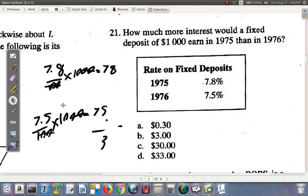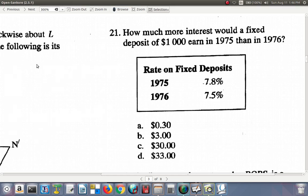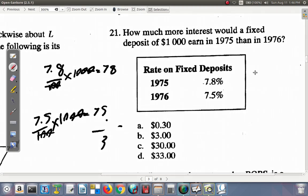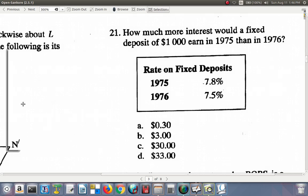You could consider also that when you have 7.8 minus 7.5, you get 0.3. And when you multiply that by 1,000, 0.3 over 100 times 1,000, that's 0.3 times 10, and you get $3. So, the answer is B.